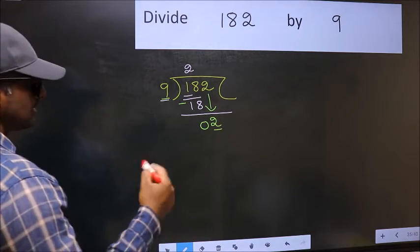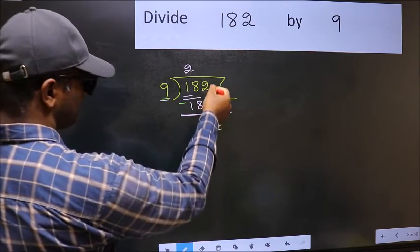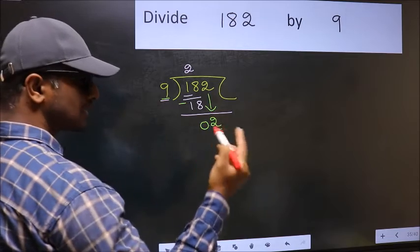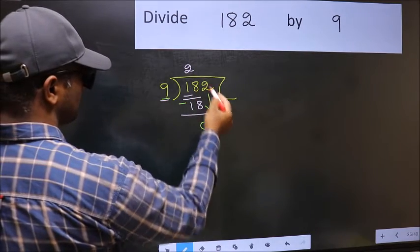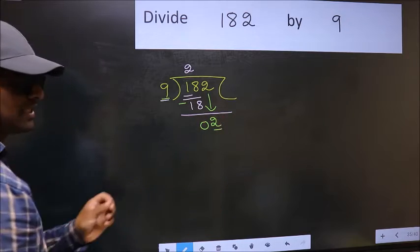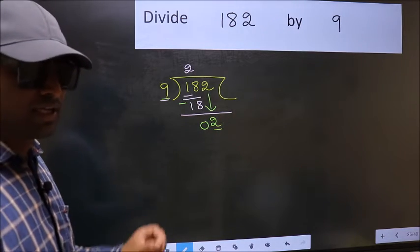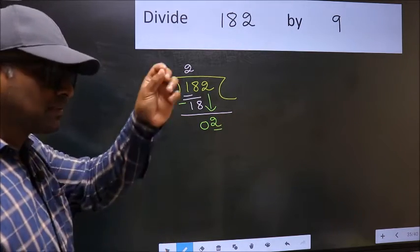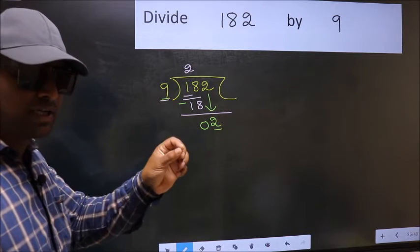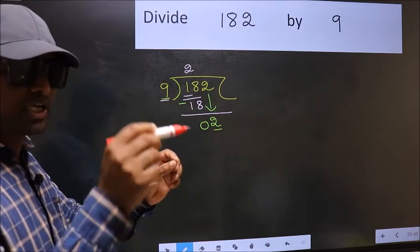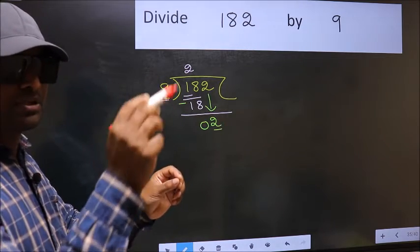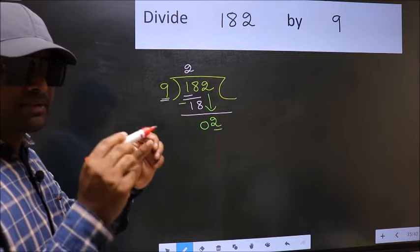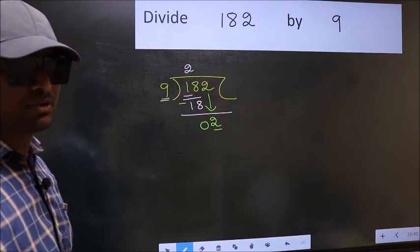Because just now you brought this number down. And in the same step, you want to put dot and take 0. Which is wrong. I repeat. Bringing the number down and putting dot take 0 both at the same step, you should not do.